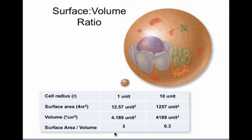The large cell has a much smaller surface area to volume ratio of just 0.3, and this has great implications for the functioning of the cell.